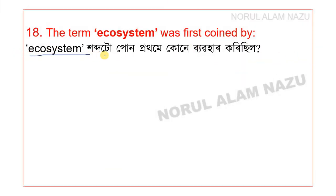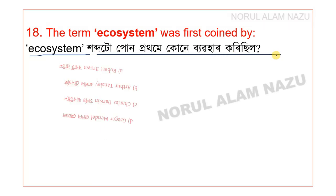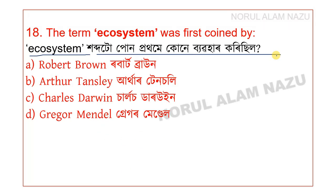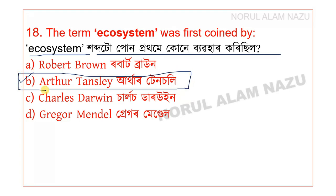Question 18: Who first used the term 'ecosystem'? The options are Robert Brown, Arthur Tansley, Charles Darwin, and Gregor Mendel. The answer is Arthur Tansley, who was the first to use the term 'ecosystem' in ecology.